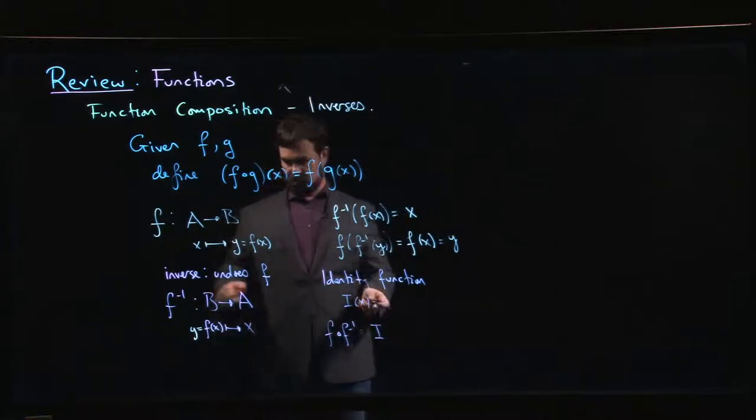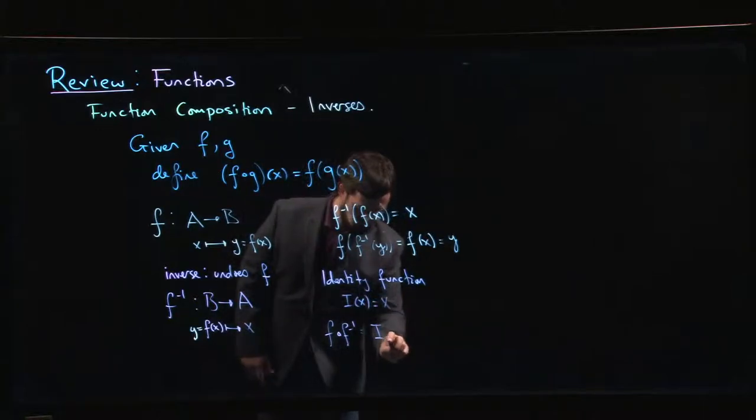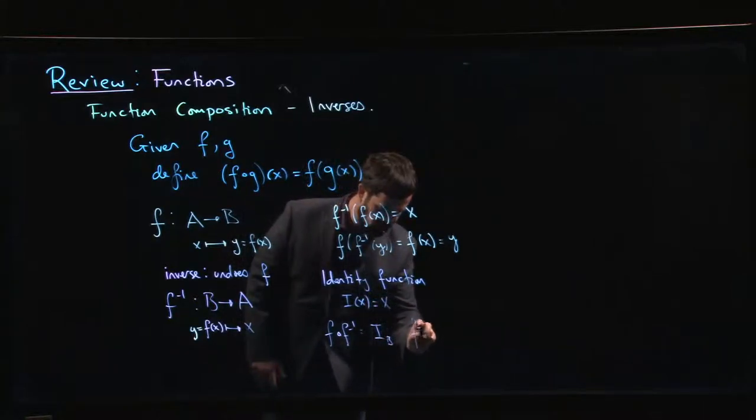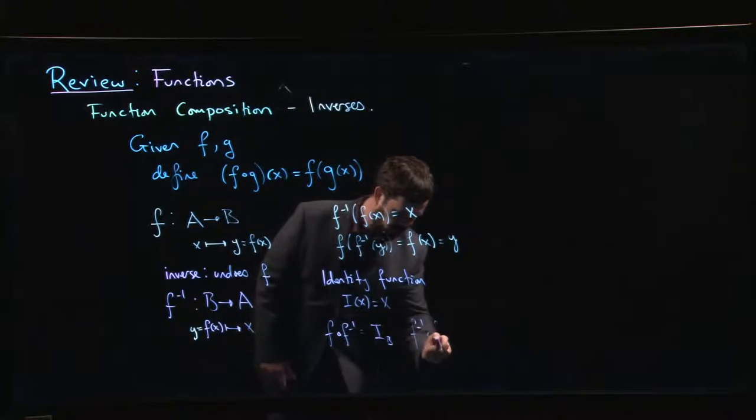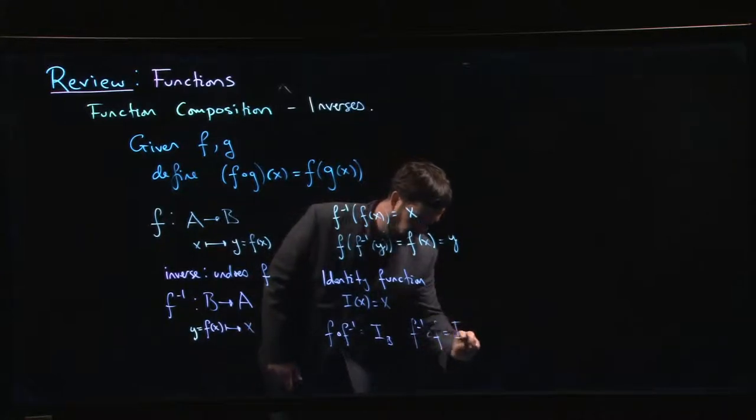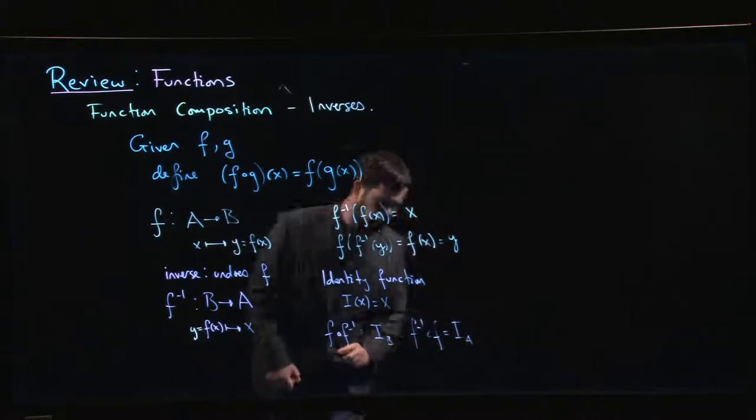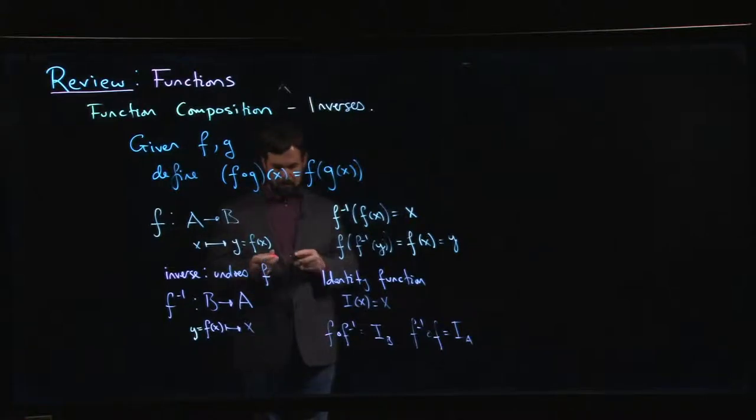And so what this amounts to saying is that f composed with f inverse is the identity function. If you like, this is the identity function on b. And f inverse composed with f is identity function on a. So they cancel each other out.